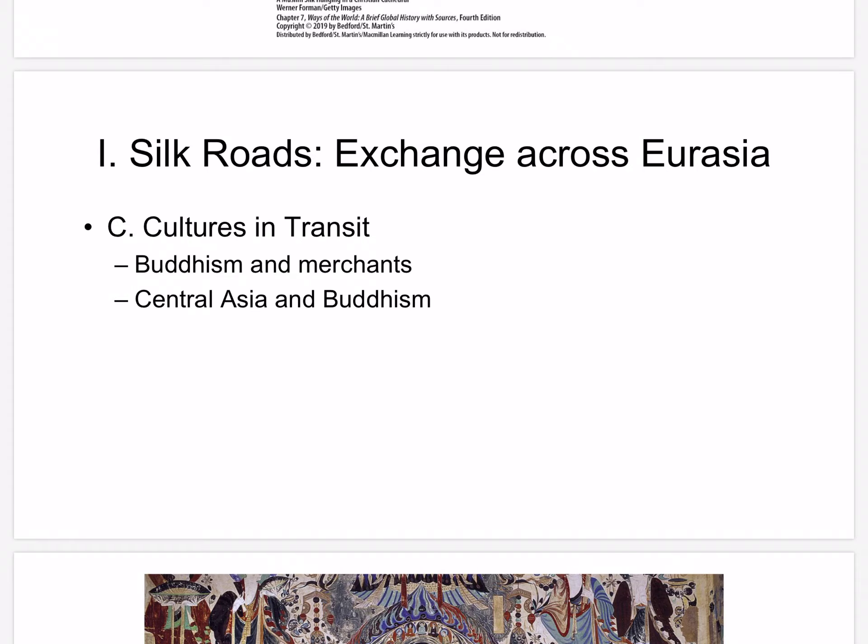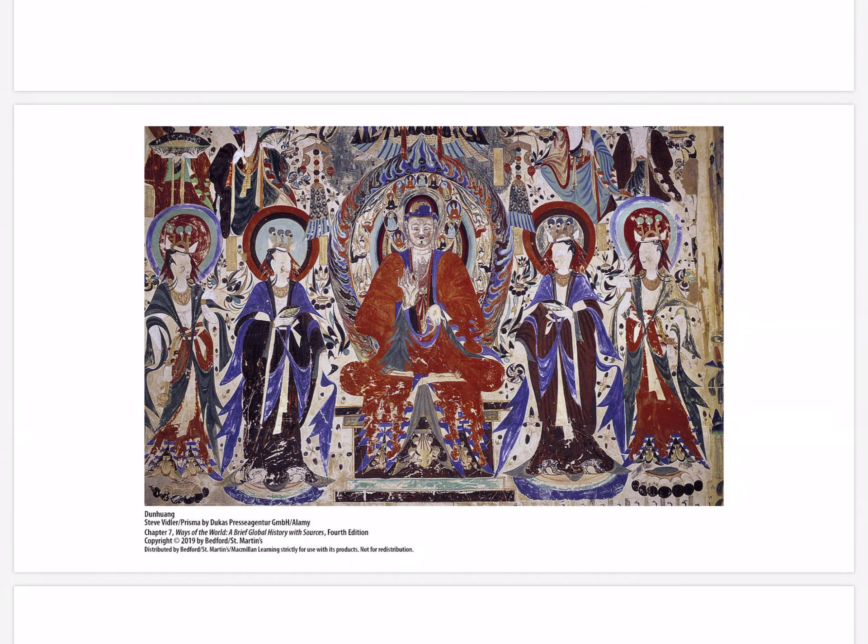An example is the Buddhist texts and cave temples at Dunhuang. Located in western China at a critical junction of the Silk Road trading network, Dunhuang was also a center of Buddhist learning, painting, and sculpture as that religion made its way from India to China and beyond. In some 492 caves carved out of rock between 400 and 1400 CE, there is a remarkable gallery of Buddhist art that has been preserved. In this image, the Buddha is surrounded by other enlightened beings, or bodhisattvas.